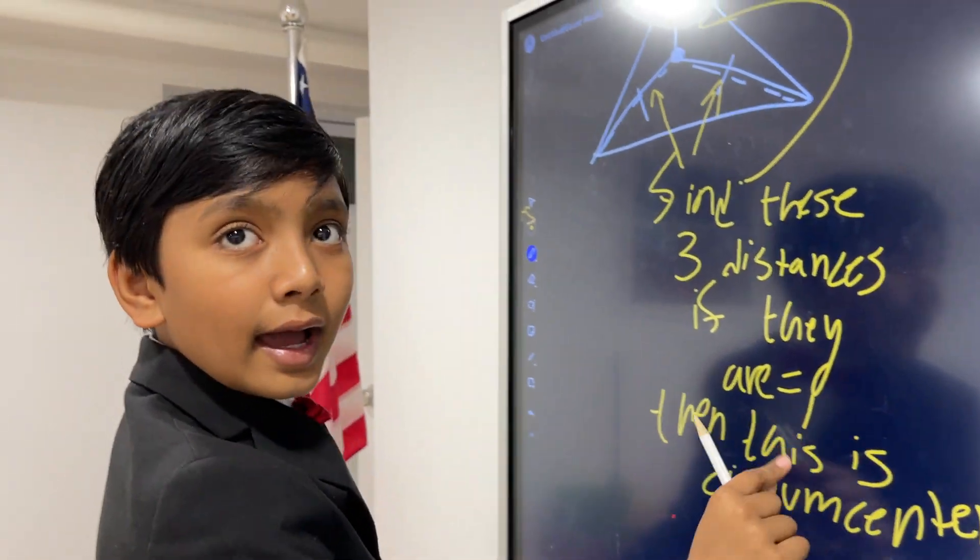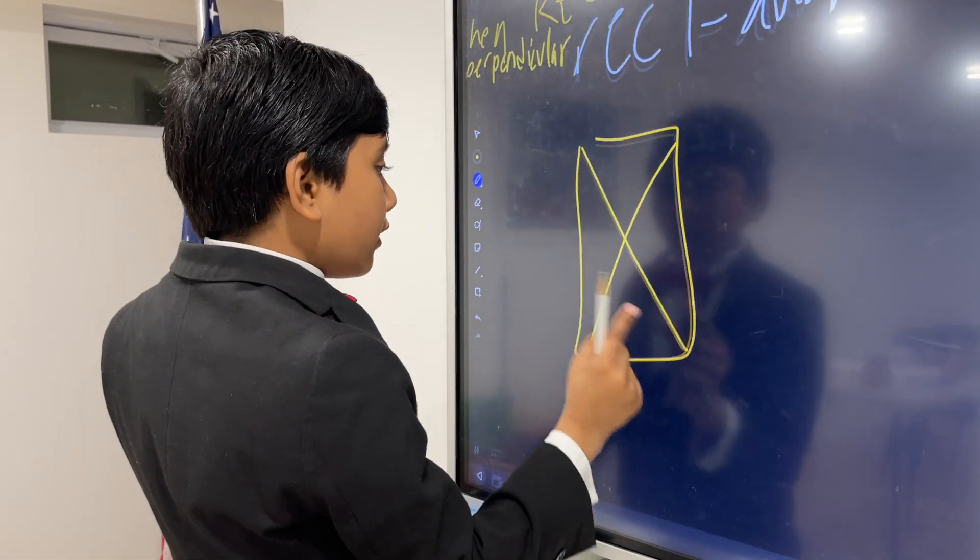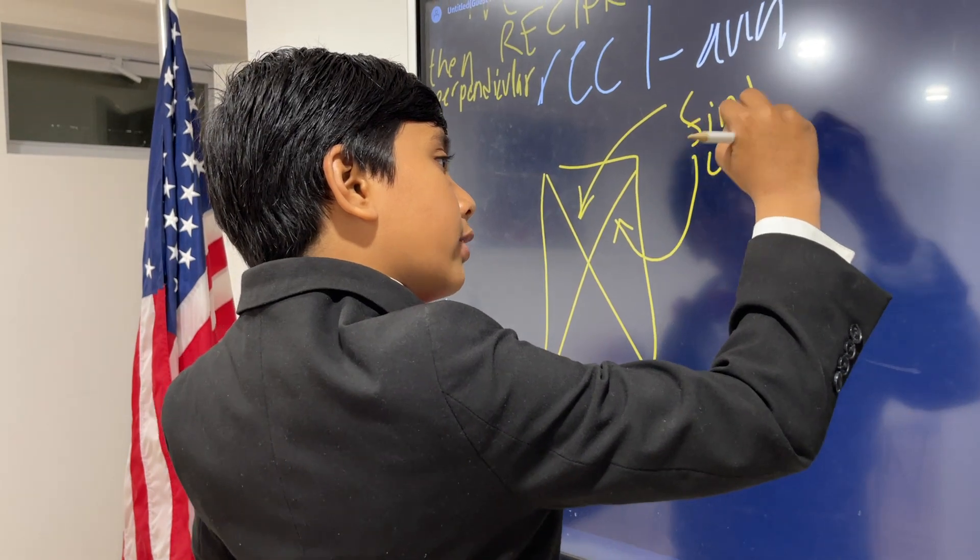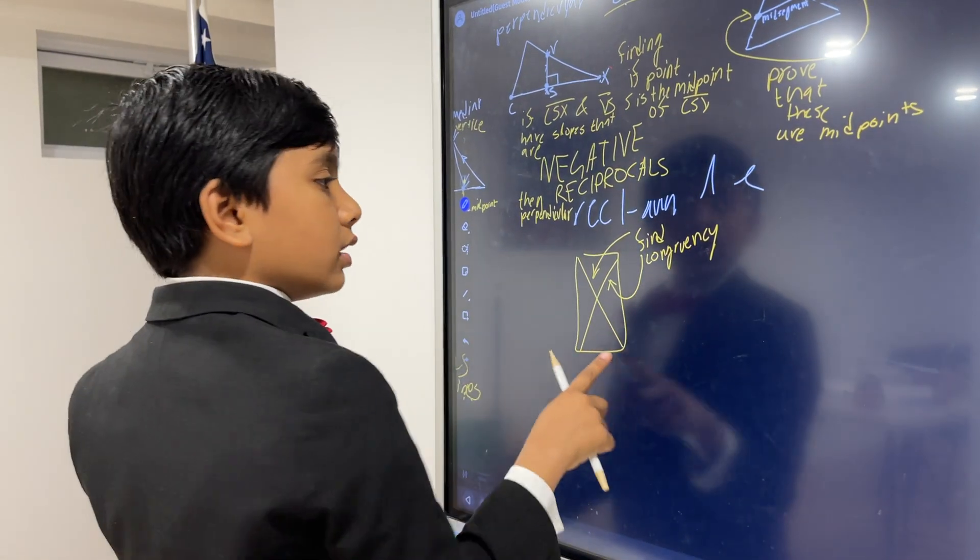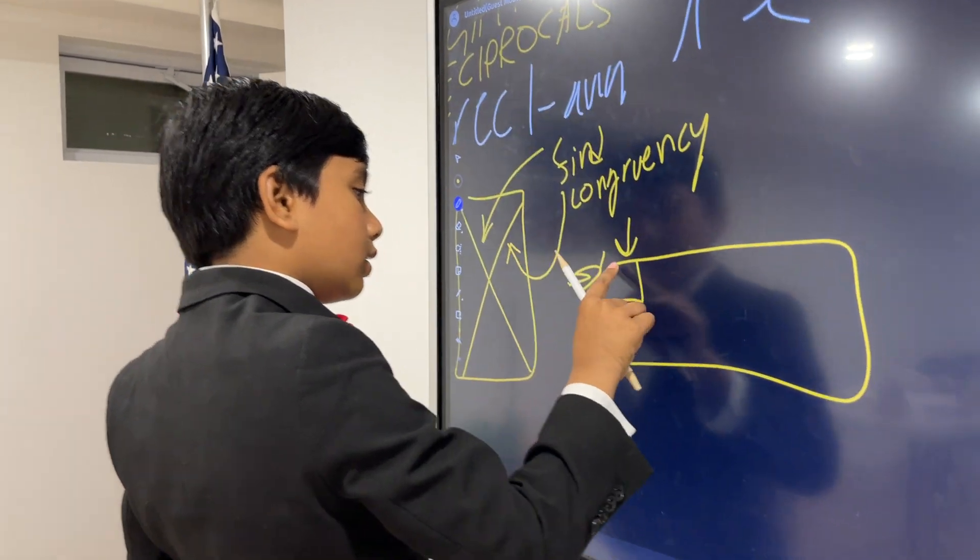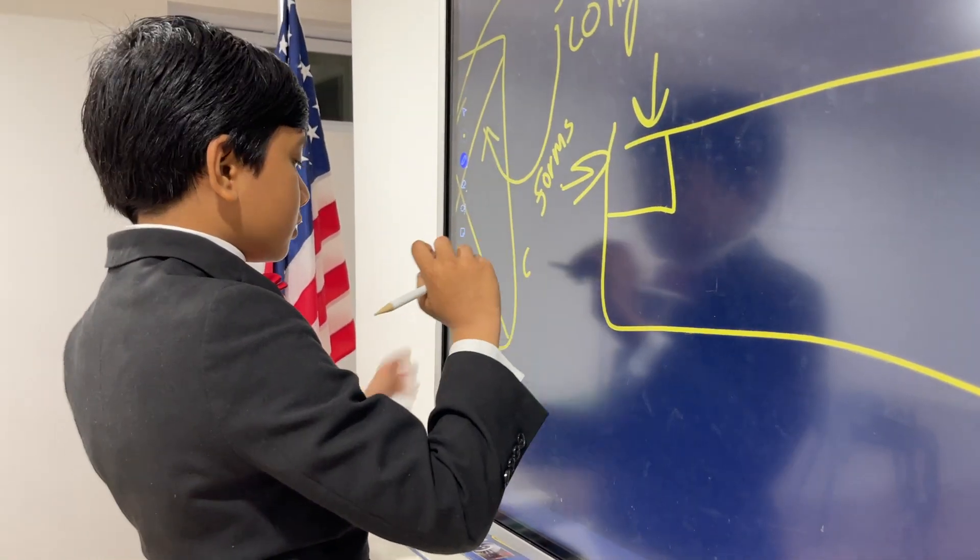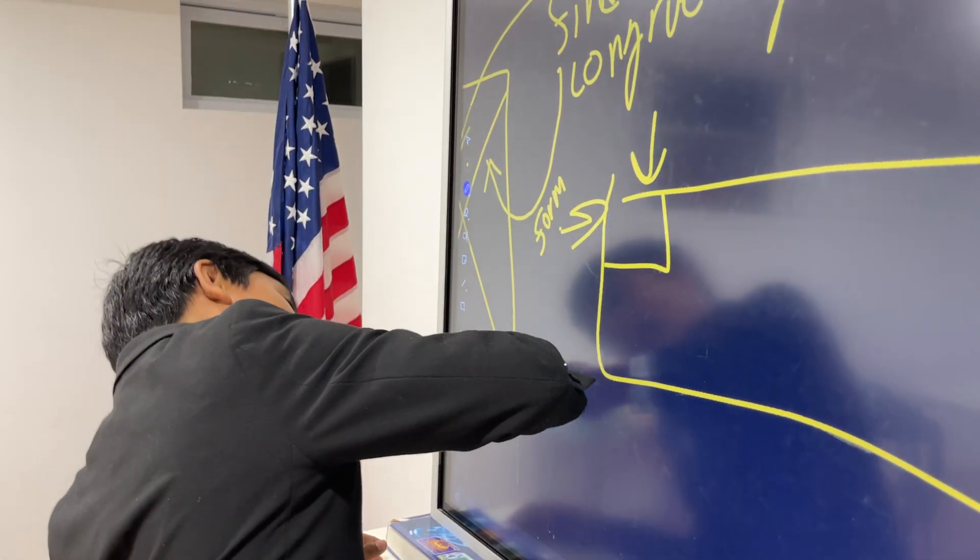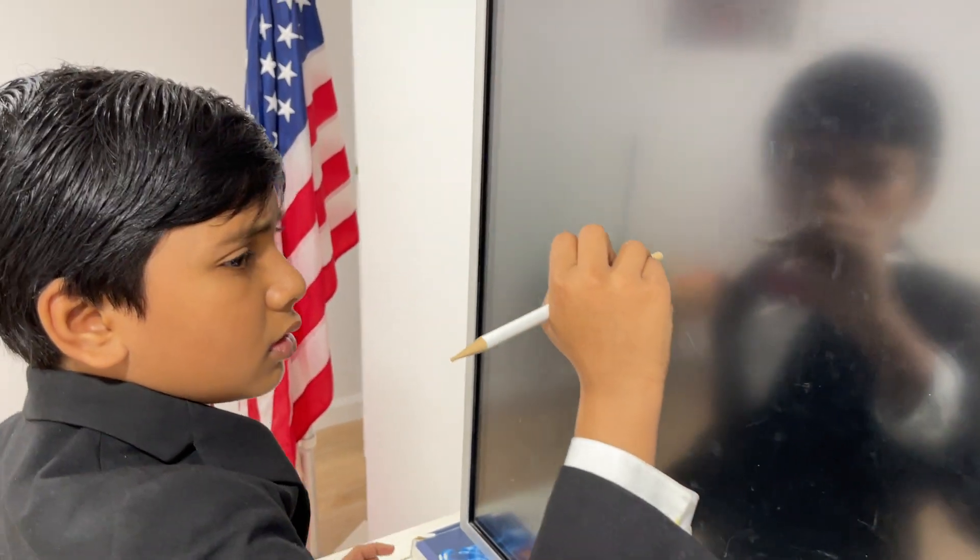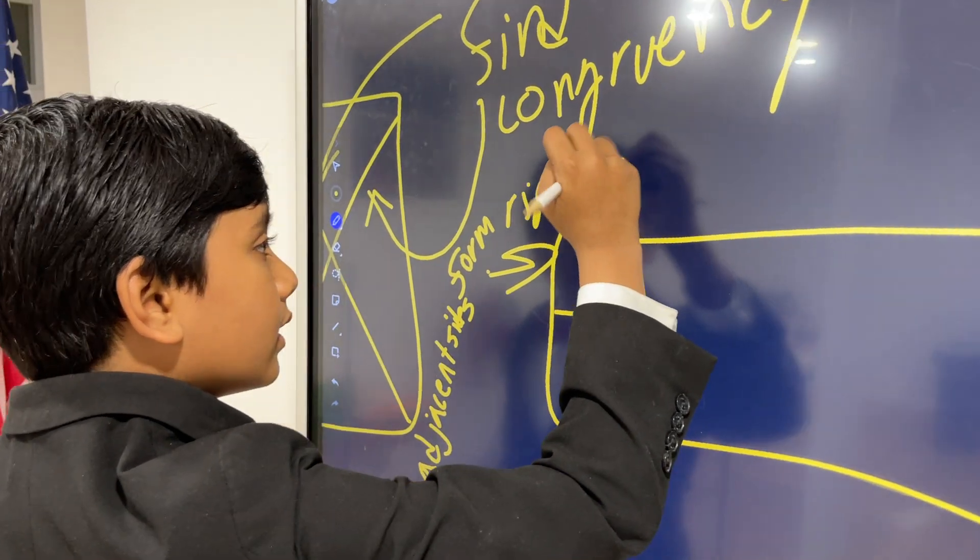And finally, a rectangle. Now a rectangle has two ways to be proven. You could either find if the diagonals were congruent, or you could find if two consecutive sides had negative reciprocals for slopes and form the right angle. So adjacent sides form the right angle. Form the right angle.